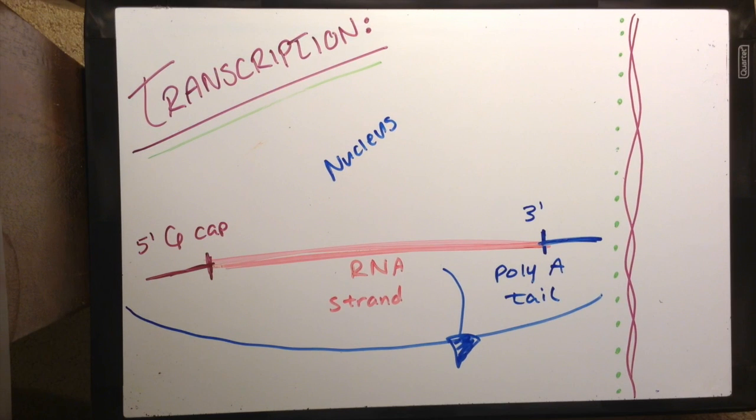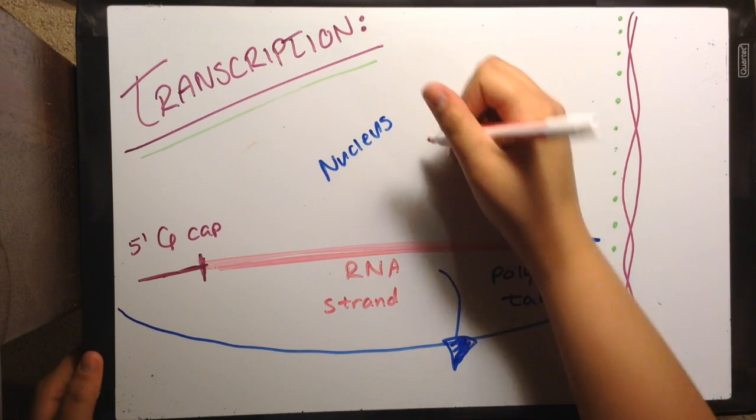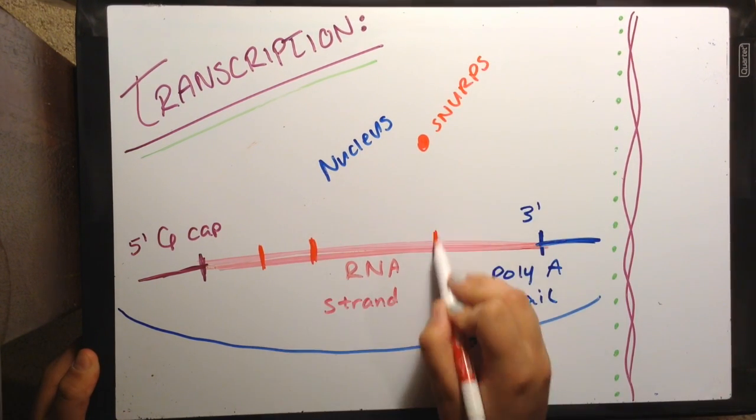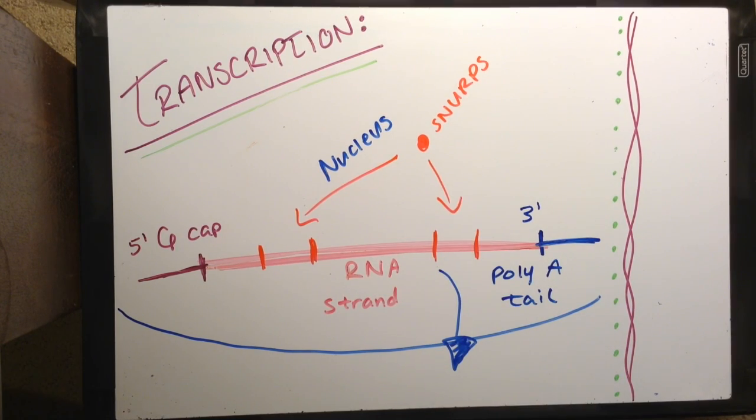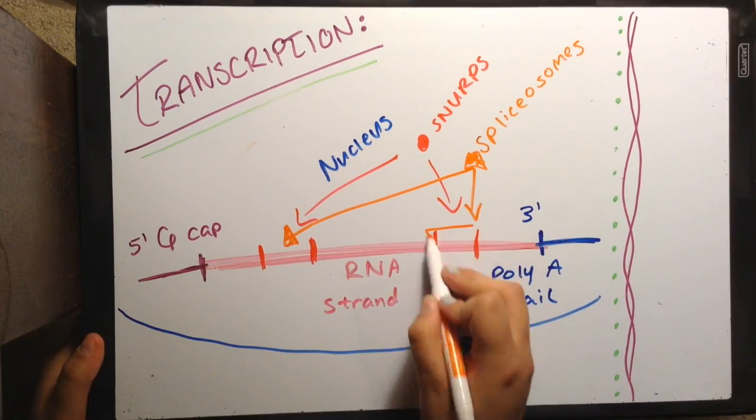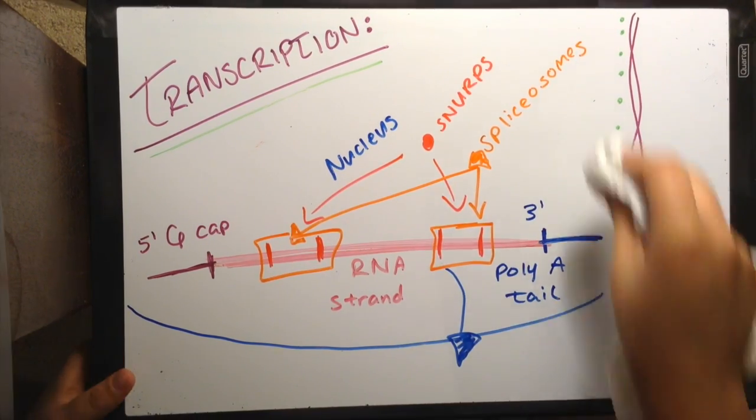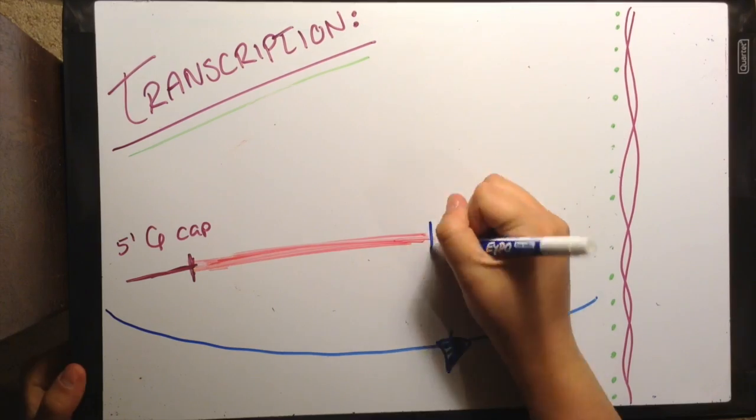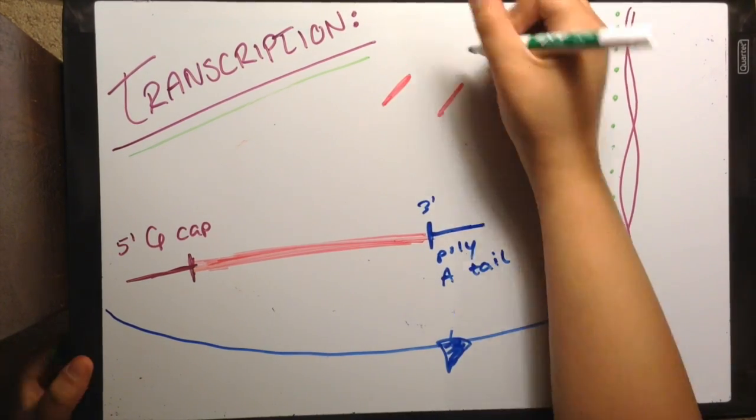This process is called RNA splicing. We first use snRNPs to signal the start and end of the splicing areas, and we then use spliceosomes to actually do the editing and take out the introns that don't express anything. This leaves the exons present, which will express everything needed to make a protein.